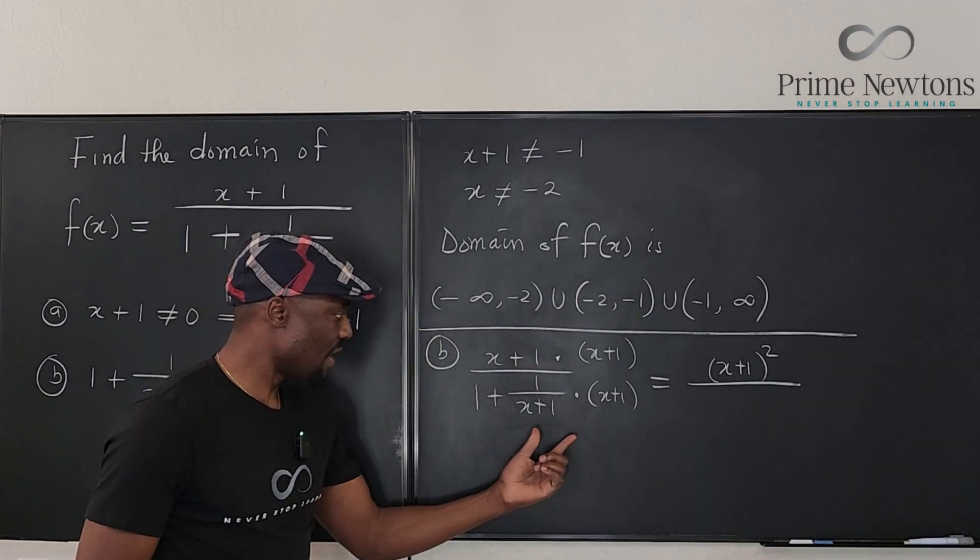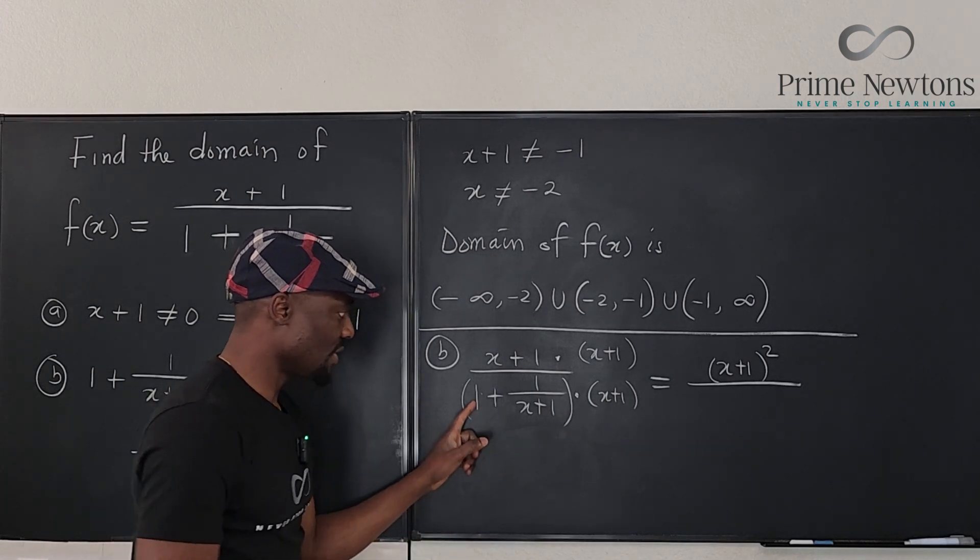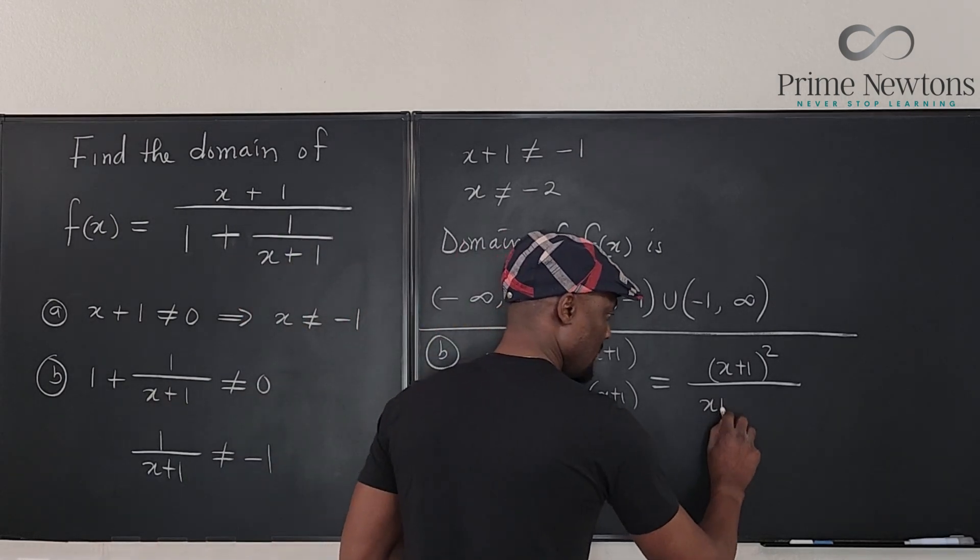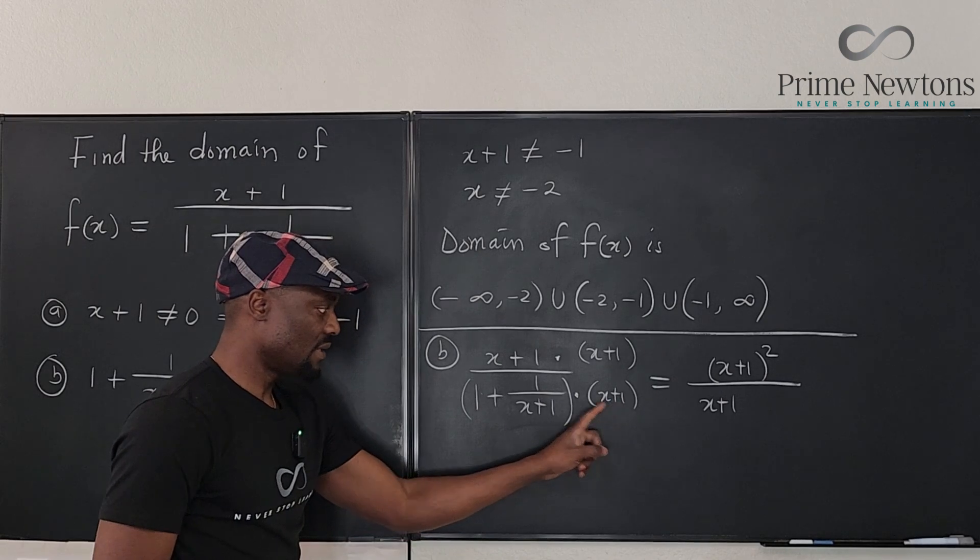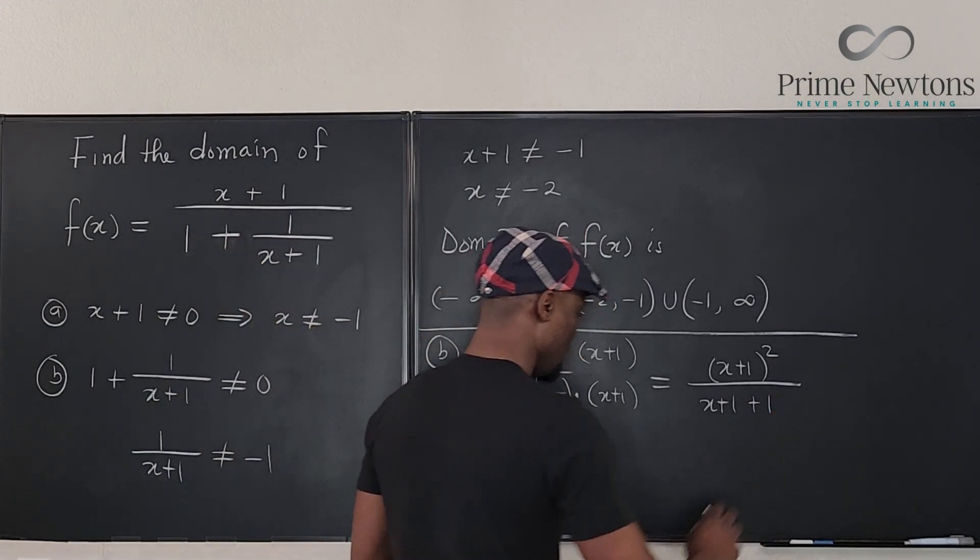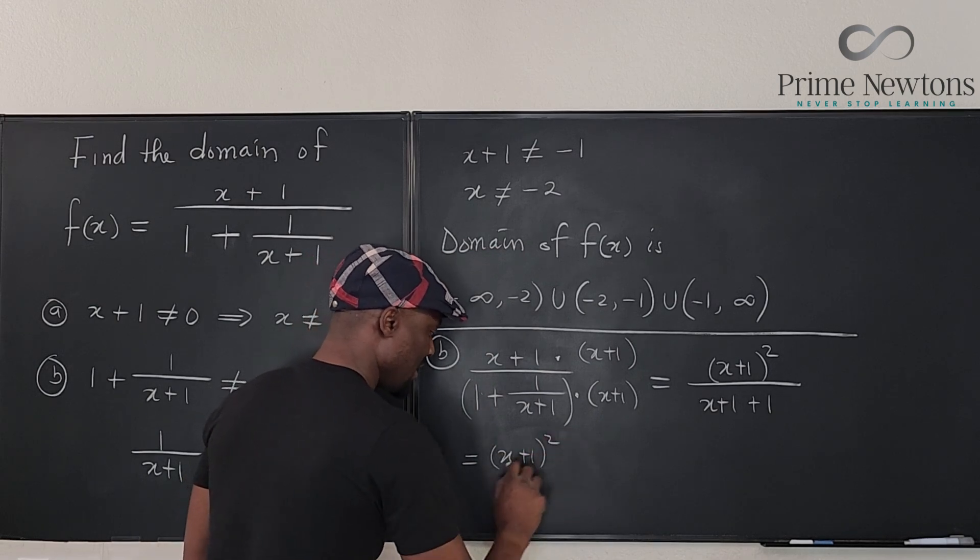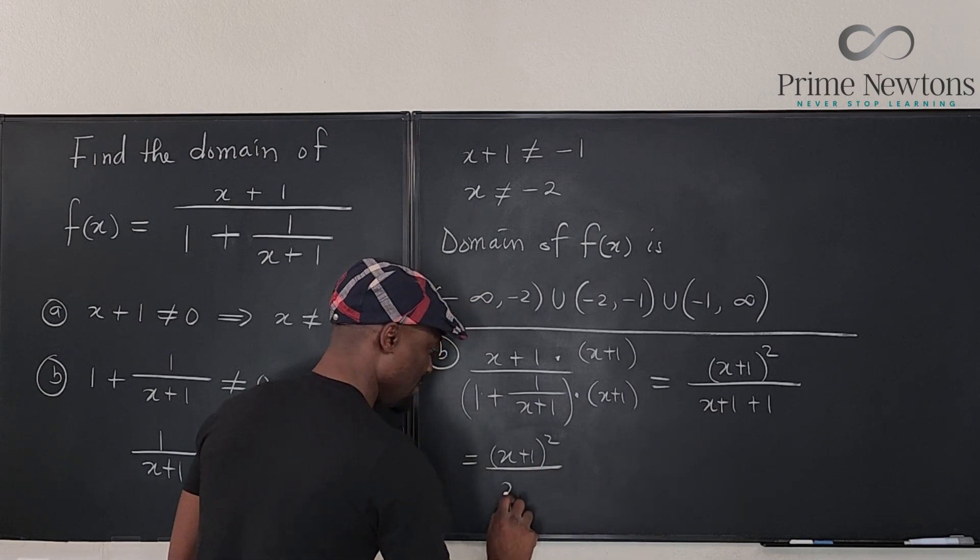On top here, I'm going to end up with x plus 1 squared. And the bottom, I'm going to have, see I'm multiplying all of this. So this times this is going to give me x plus 1. And this times this is going to give me just 1. So plus 1. So see what I have? I have x plus 1 squared divided by x plus 2.